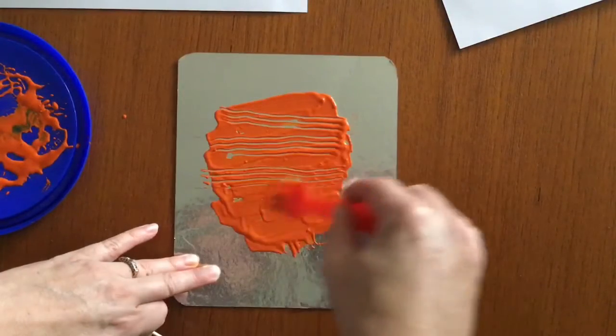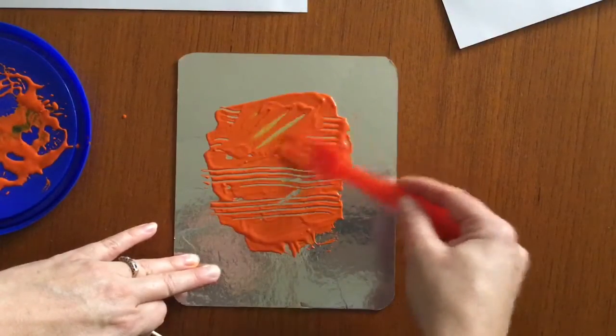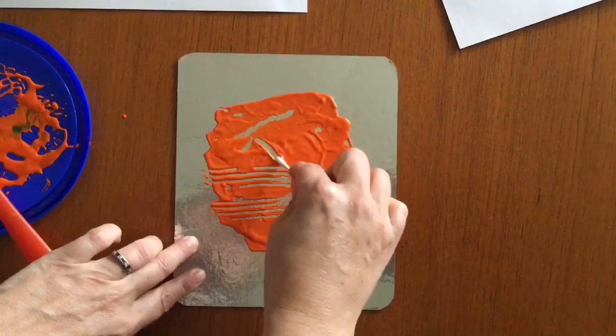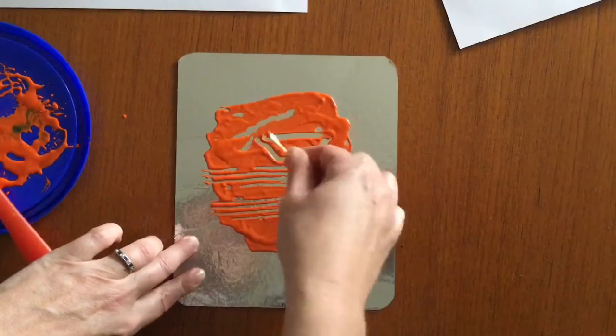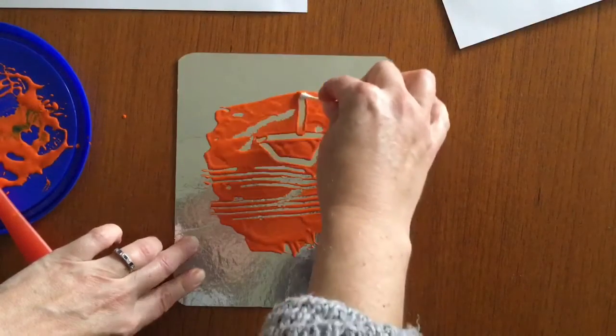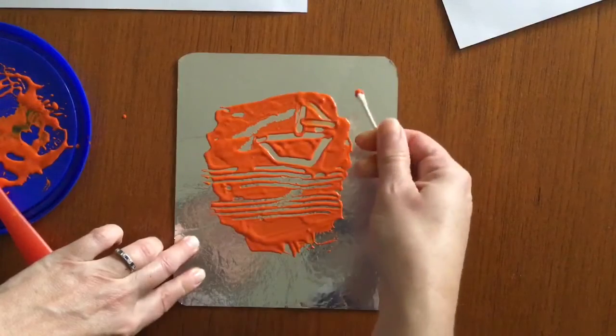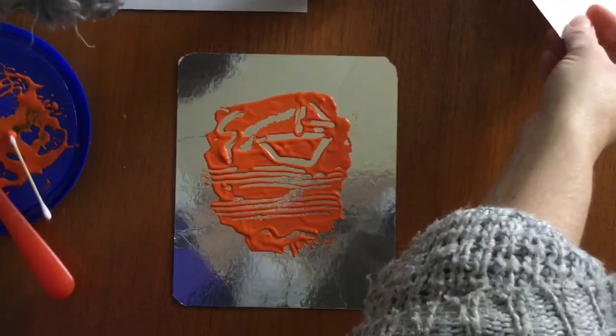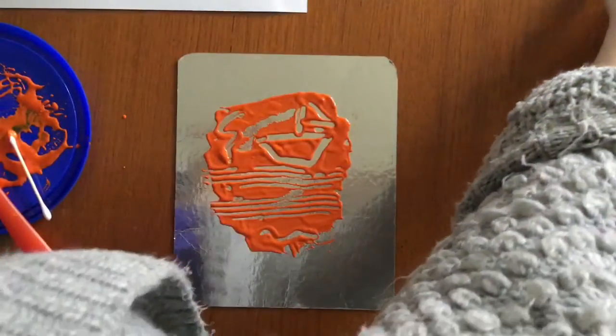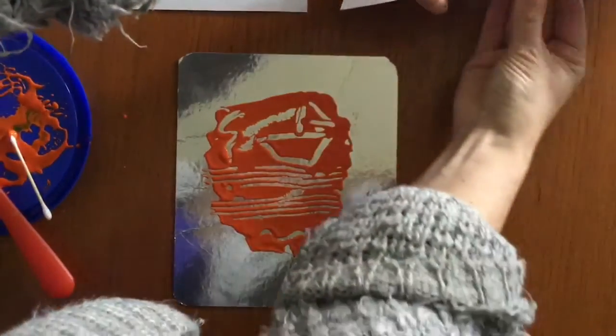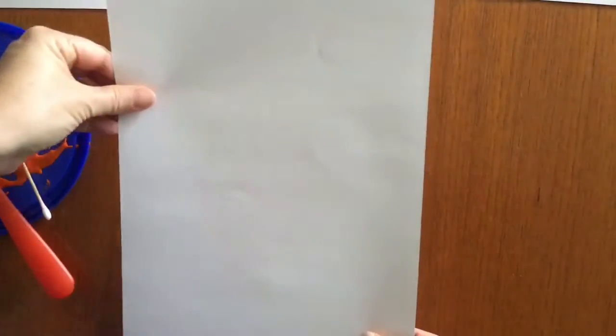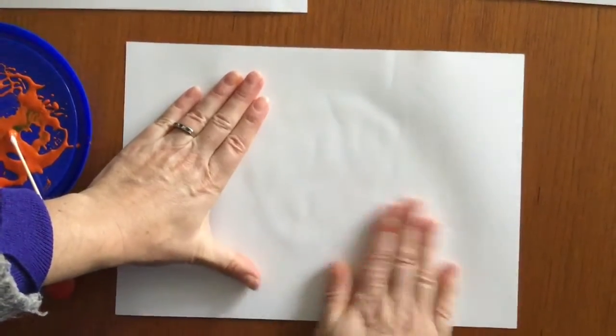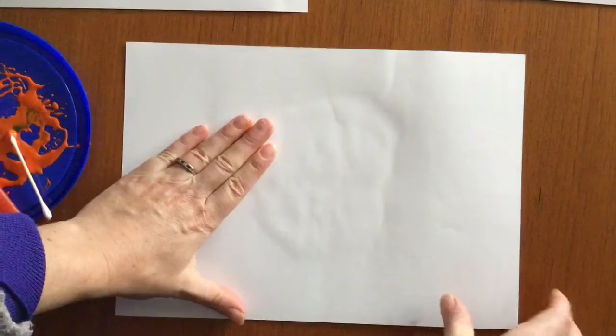Now I can use the fork to draw some lines in the paint. If I don't like it I can just push the paint back around. Maybe I'll leave some lines there and then I'm going to use a cotton tip. You can use your finger. You can use one prong of the fork and maybe I'll put a sailboat or something up here. Just some lines and I'm going to get my piece of paper and lay the paper over the top like this, push down and then my favourite part, peel to reveal.